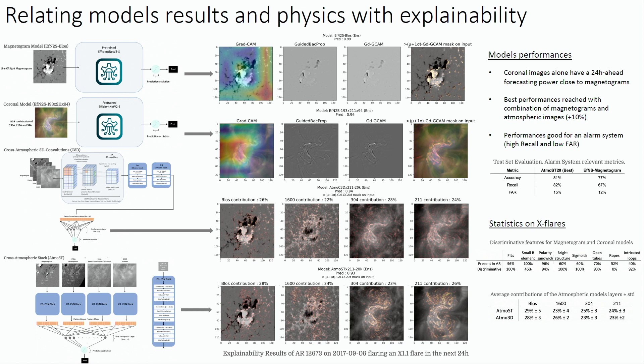And so basically, we find that each model converges consistently to using physical features. In the case of the magnetogram, like peels, but also small magnetic elements, like their numbers, which is known to be contributing to the D-index, which is a very discriminative flare precursor for strong flares, like X-flares. And also, with these first models,